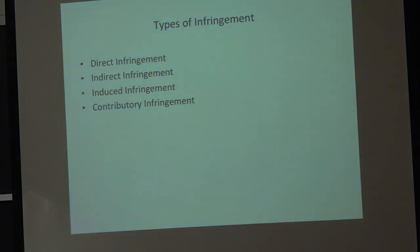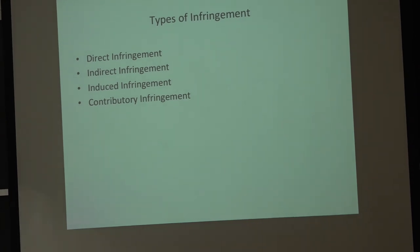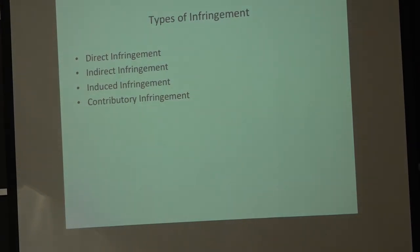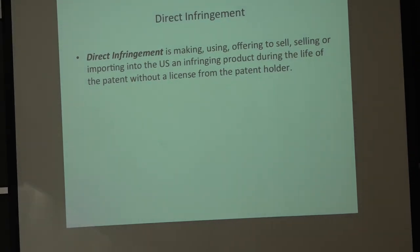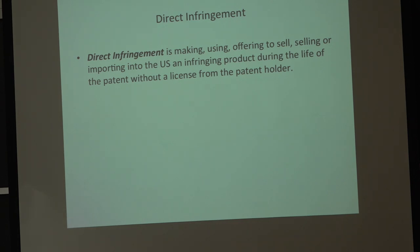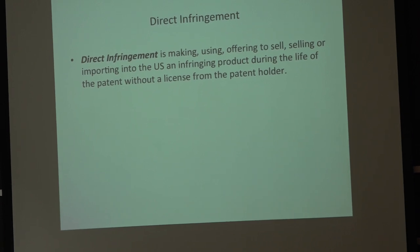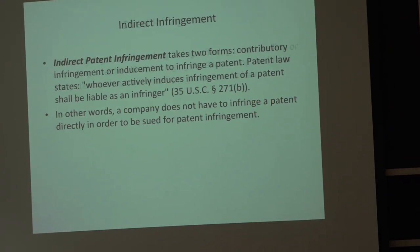Within those categories there are different types of infringement: direct infringement, indirect infringement, induced infringement, and contributory infringement. Direct infringement is the actual making, using, offering to sell, selling, or importing into the U.S. or any country where there is intellectual property right protection, an infringing product during the life of the patent without a license from the patent holder. So if you steal somebody's intellectual property, that's a form of direct infringement.